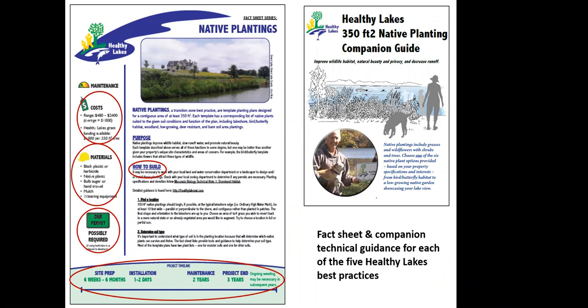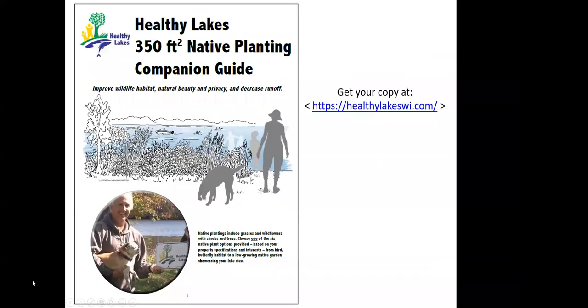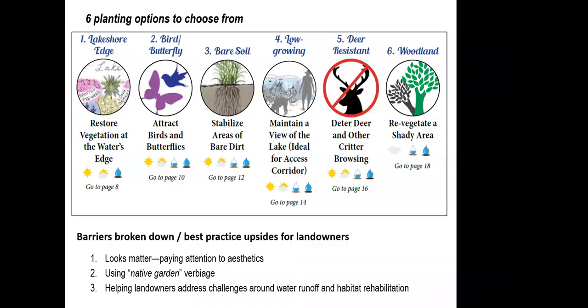The companion guide is meant to be a technical reference to help walk you through making the choices that come together to do a good project. Within the guide — which you can find at the Healthy Lakes standalone website — there are six planting options, each with a different goal that you might have as a landowner. The one I'll spend some time on is lakeshore edge: that land-water interface, a wet-foot situation typically. The other five options include bird and butterfly — more of those pollinator plants including host and nectar plants that help support pollinators and migratory birds.